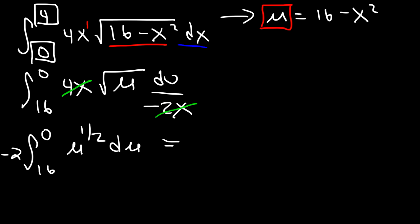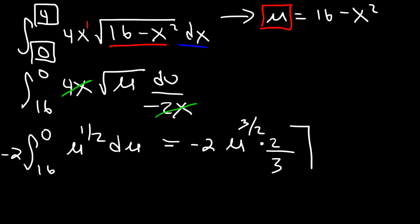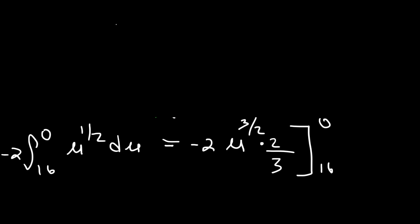The antiderivative of u raised to the one half: add 1 to get 3 over 2, then multiply by the reciprocal 2 over 3. We still have a negative 2 in front, and we evaluate from 16 to 0. Negative 2 times 2 thirds equals negative 4 thirds.